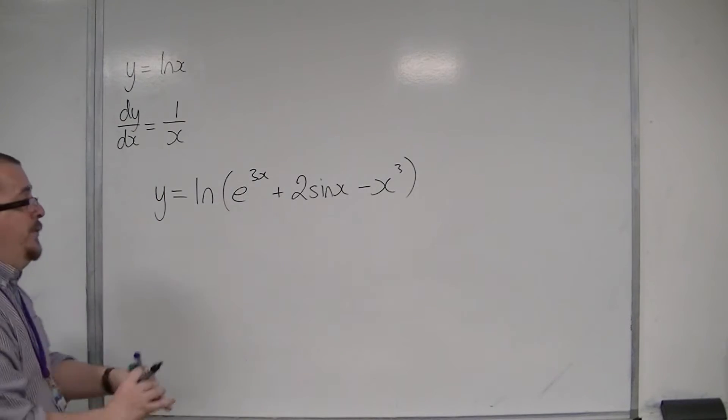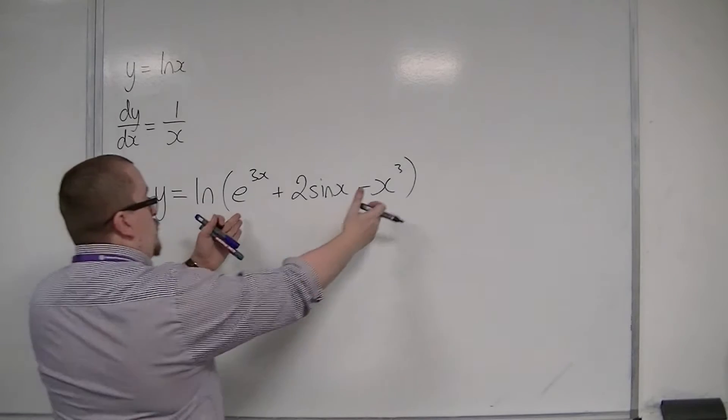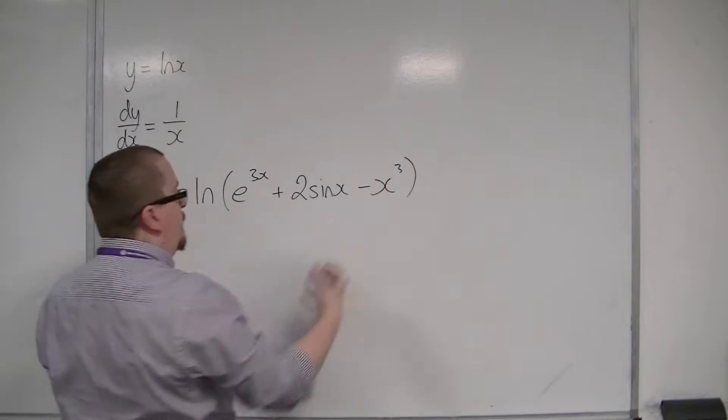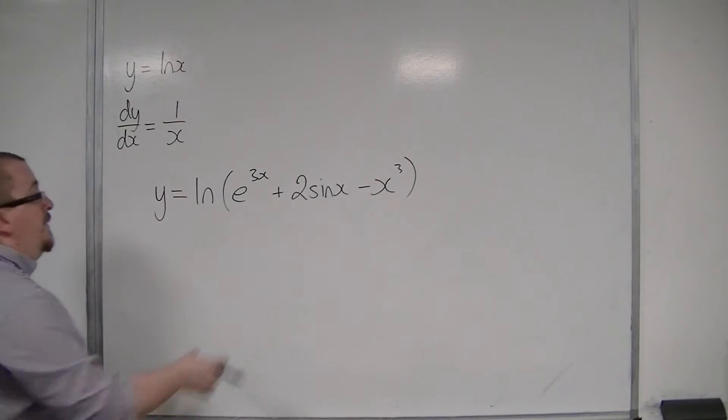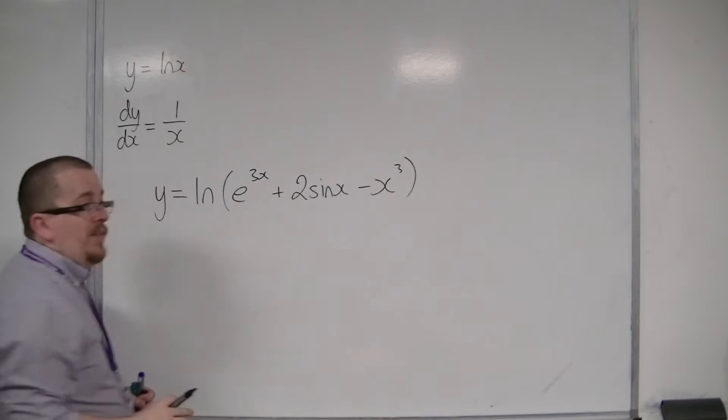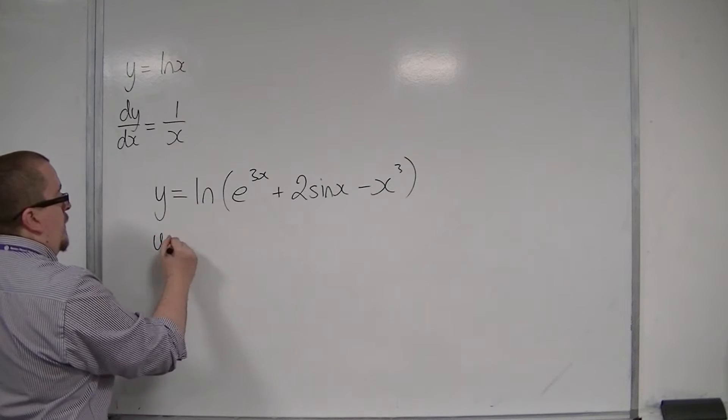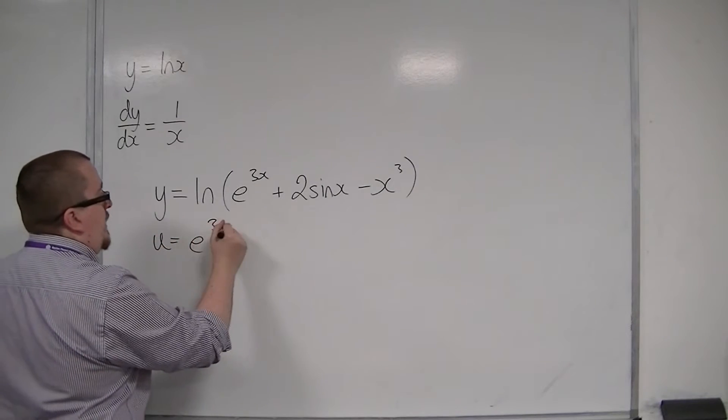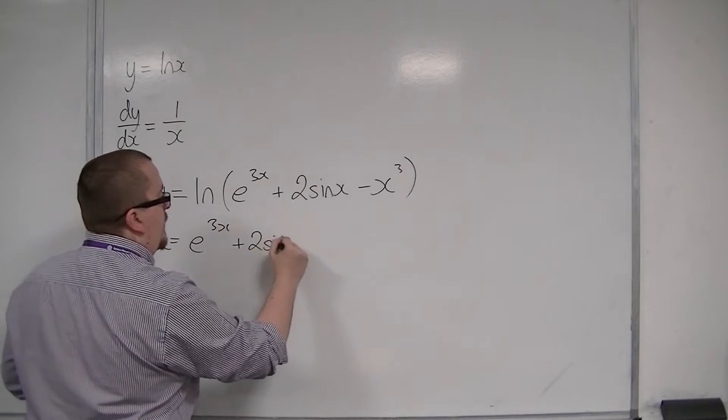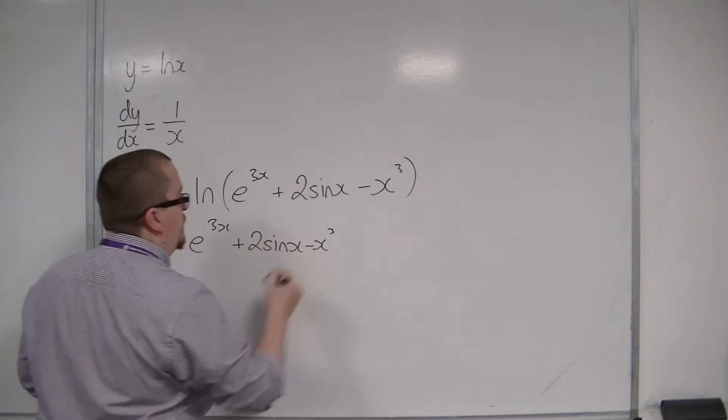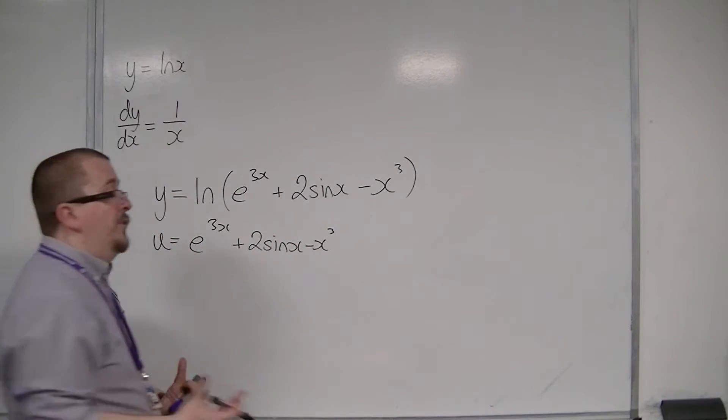So we're going to use the chain rule, because we have this horrible looking function of x within a function of x. And I know I can differentiate each of those pieces well enough. So u is going to be e to the 3x plus 2 sin x minus x cubed. And so I'm left with y is equal to log of u.